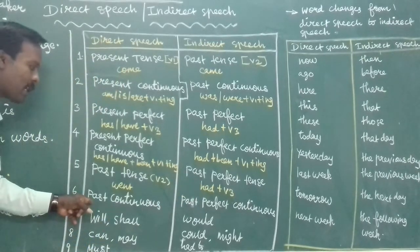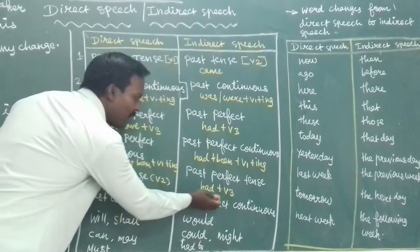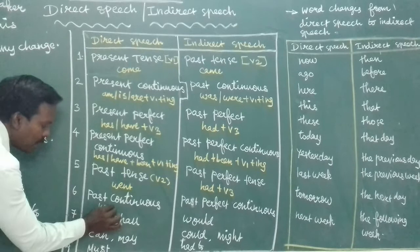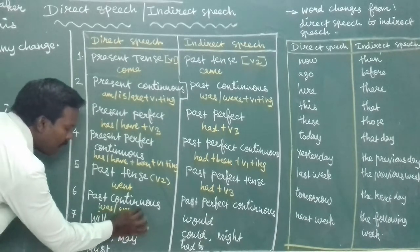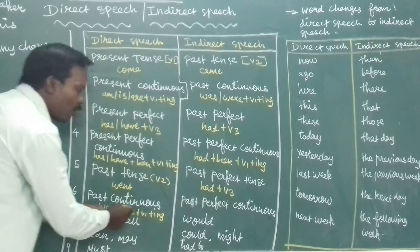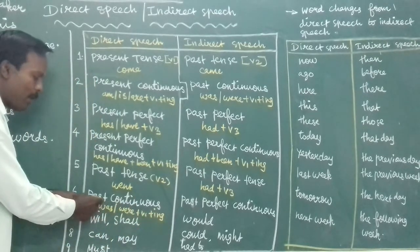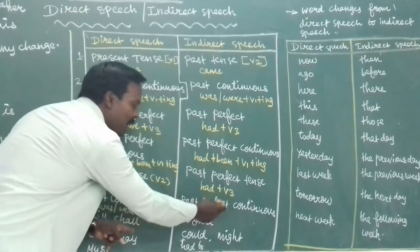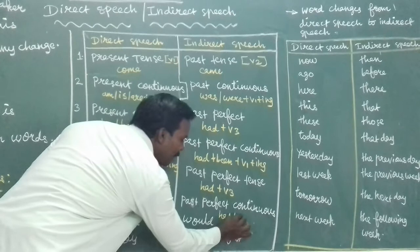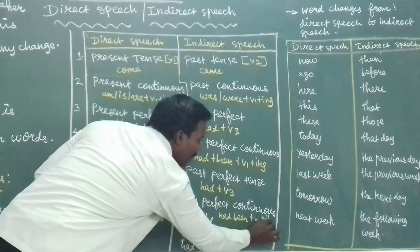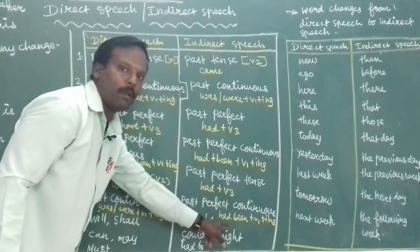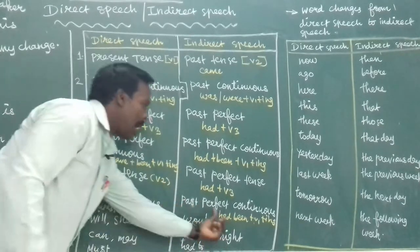Sixth tense change: past continuous tense changes to past perfect continuous tense. Past continuous tense is formed with was or were plus V1+ing. This changes to past perfect continuous tense, which is formed with had been plus V1+ing. So was/were changes to had been.